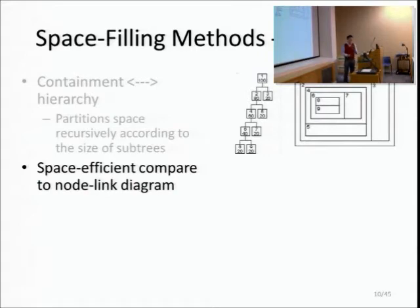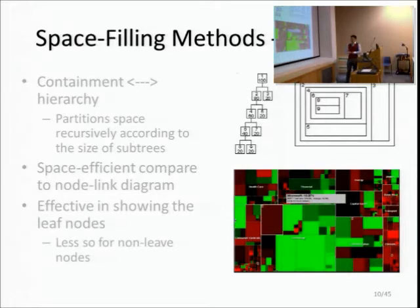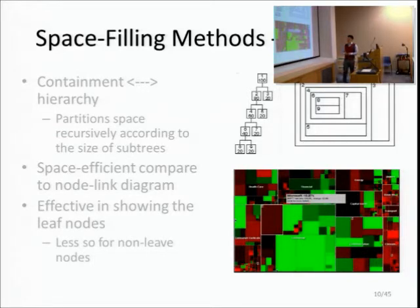The biggest advantage of the tree map is that it's space-efficient - you can always adjust it to occupy the whole display area with no wasted space. It's quite effective for showing leaf nodes, though less so for non-leaf nodes. Here's a practical example showing stock prices divided by industry sector, with red and green showing price changes. It's fairly easy to see how individual stocks are doing, but less so in terms of the hierarchical structure.